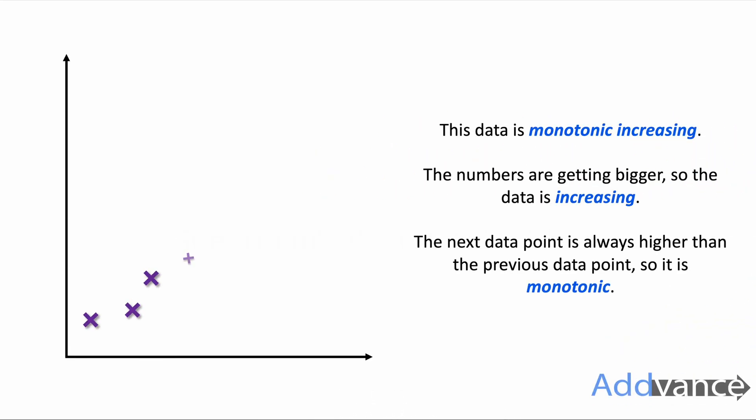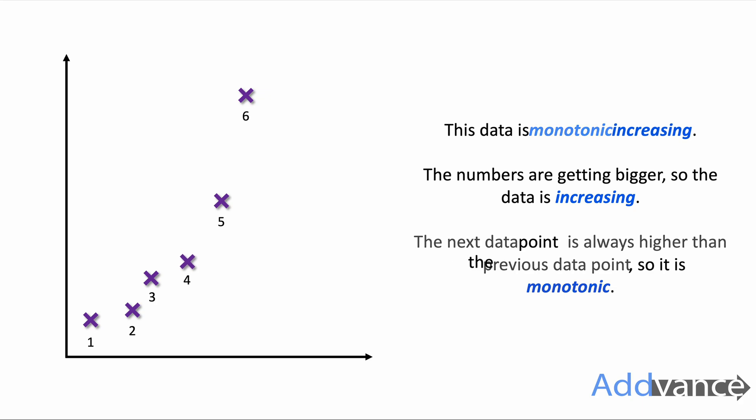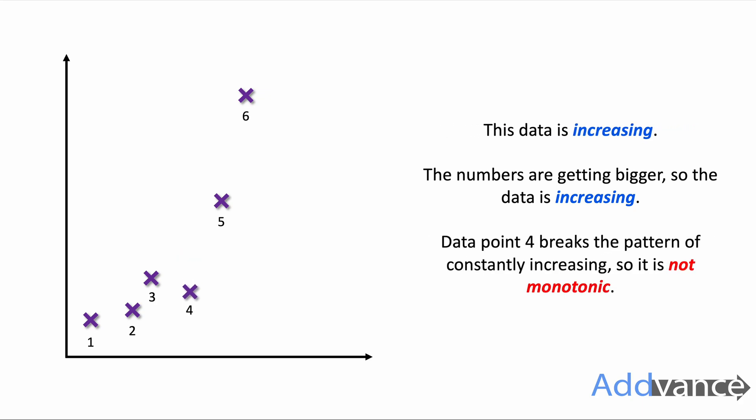Here we can look at a graph and this graph is monotonic increasing. That's because all the data points are going up and they're going up in perfect order. Here we have a graph that's increasing but it's not monotonic, because data point four breaks the pattern — it is not always increasing.